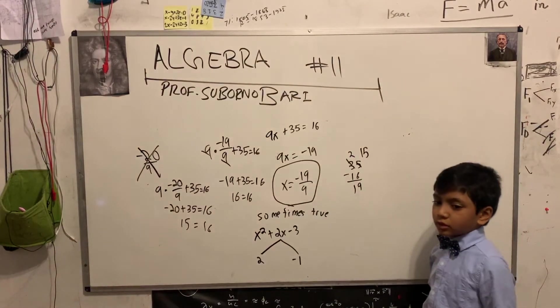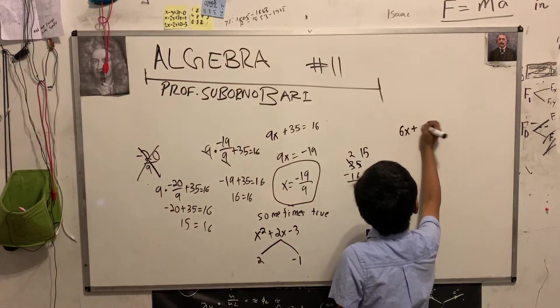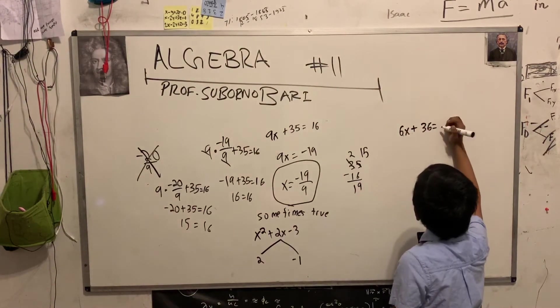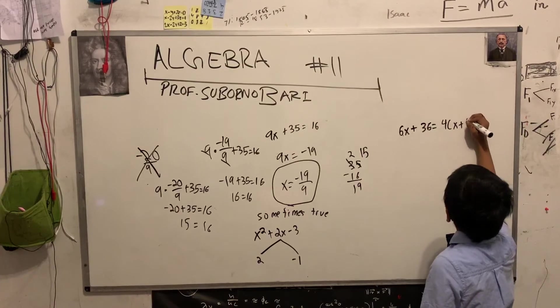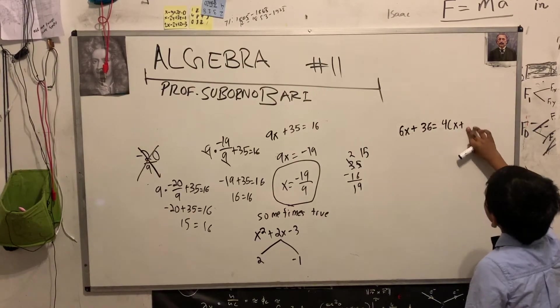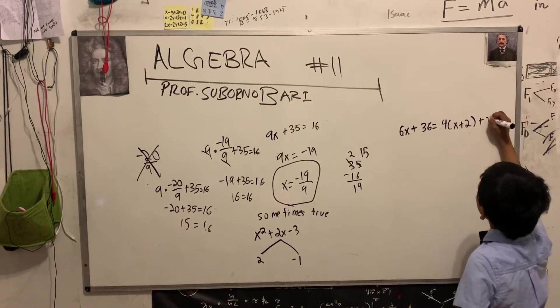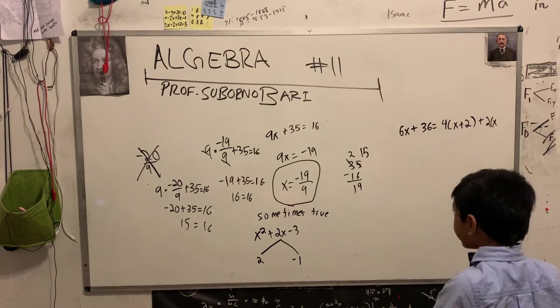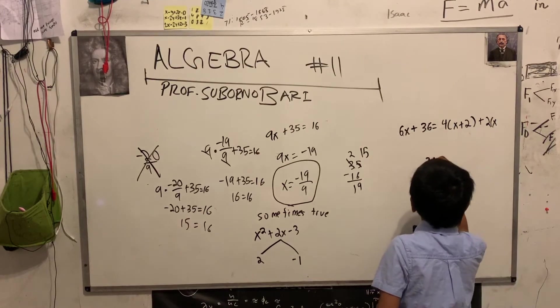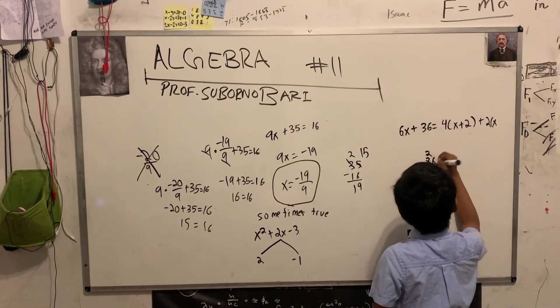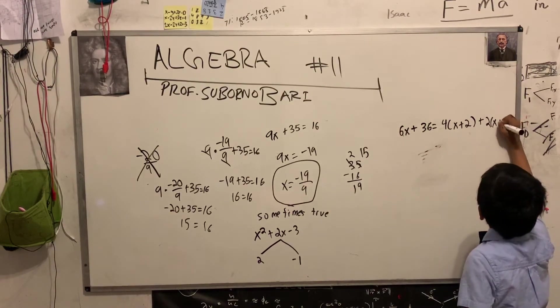But an identity is something that's true for everything. Say, 6x plus 36 equals to 4 times x plus 2, plus 2x. And then, what do I need to add to this? 8! And then, 36 minus 8 is going to be 2, 16, 8, 28. So, that's going to be 14. Okay.